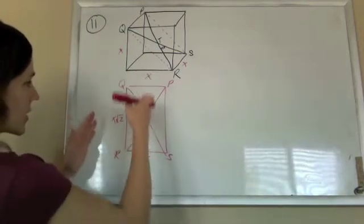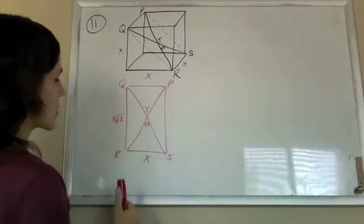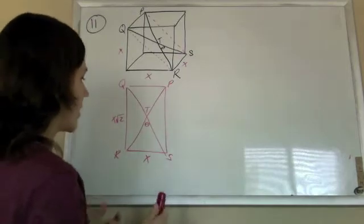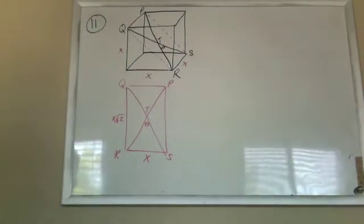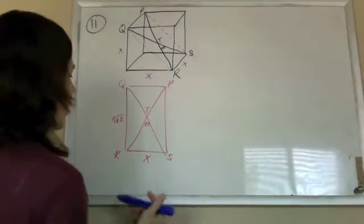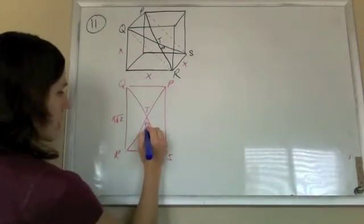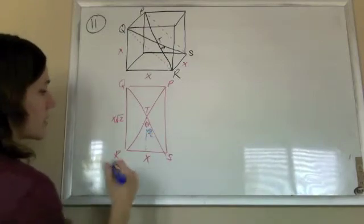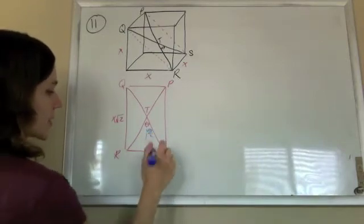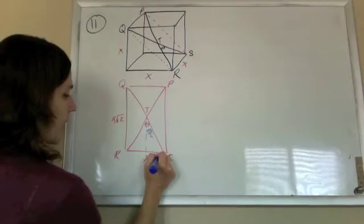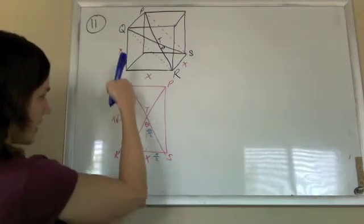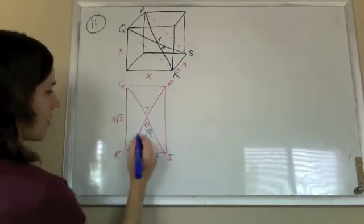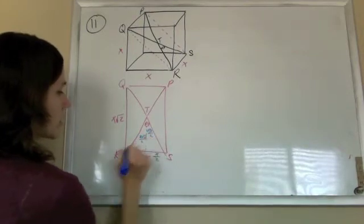So now everything in this cube is nice and symmetric, so we're going to chop everything in half. So when we do that, I'll chop the angle in half. That gives me that theta over 2, which is what I want. This guy's chopped in half. That gives me X over 2. And this height is chopped in half. That gives me X root 2 over 2.